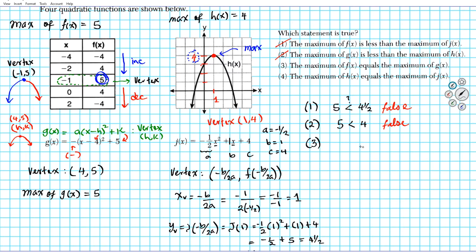Option 3. Is the maximum of f of x equal to the maximum of g of x? F of x, the maximum of f of x is 5. Is it equal to the maximum of g of x, which is also 5? Is this a true statement? Yes. It is. This is absolutely true. So this is our answer right here. Option number 3.